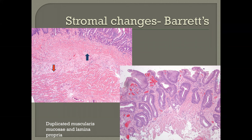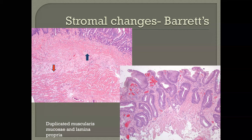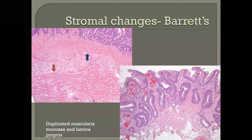With Barrett's esophagus, we can also see additional stromal changes. One is the so-called duplication of the muscularis mucosa. With this reduplication, it can appear as though we have a mucosa, lamina propria, muscularis mucosa, submucosa, and then muscularis propria. Being aware of this change is very important as we deal with dysplasia and invasive carcinomas arising in this setting and properly staging them. Another feature is that this muscularis mucosa can get pulled up into the mucosa, creating a sort of pseudo-invasive pattern — a pitfall that needs to be avoided when dysplasia is present.